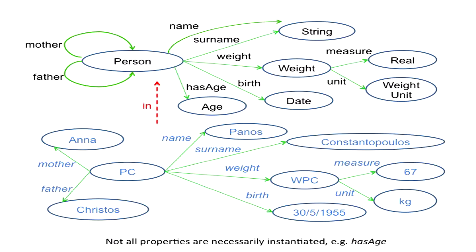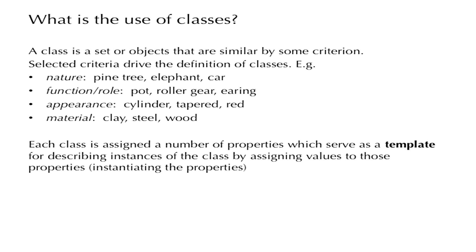We have not instantiated the has age property — not because it is hard to find out, but to show that when we instantiate an entity it is not necessary to instantiate all its properties. Remember the cardinality constraints: we have to instantiate certain properties, but if they are optional, we can just declare the entity's existence and declare whatever knowledge we have about it by instantiating the appropriate properties. This figure shows a schema at the top and instances at the bottom, with every item at the bottom being an instance of the corresponding item at the top.